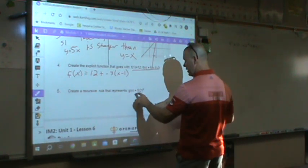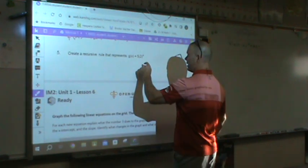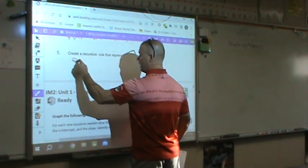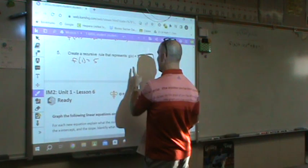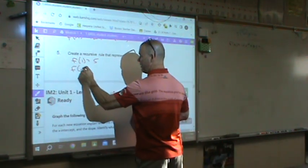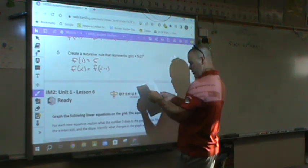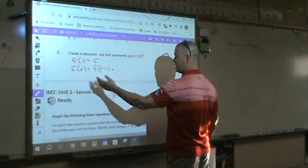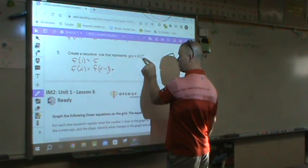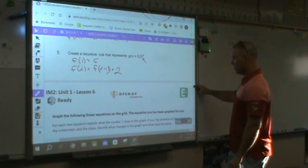Then it says create the recursive. It gives me explicit, and it gives me an exponential function. So right here, the first term, f of 1, is going to be equal to 5, because that's what that states, f of 1. Then it says f of x equals f of x minus 1, and what am I doing with that? I'm multiplying, since it's an exponential function, I'm multiplying it right here. It's telling me my common ratio. There you go. Those are done.